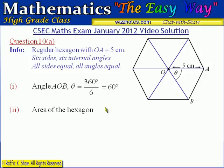Part 2 is asking for the area of the hexagon. Based on this diagram there are six congruent triangles, so if we find the area of one triangle and multiply by 6 we get the area of the hexagon. Because OA is 5 centimeters, OB is also 5 centimeters. In this triangle we have two known sides and a known included angle — the angle between those two sides.